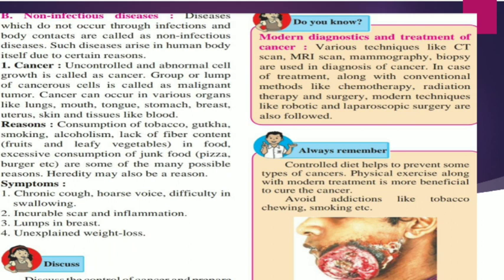Uncontrolled and abnormal cell growth is called cancer. A group or lump of cancerous cells is called a malignant tumor. Cancer can occur in various organs like lungs, mouth, tongue, stomach, breast, uterus, skin, and tissues like blood. The reasons for cancer include consumption of tobacco, gutka, smoking, alcoholism, lack of fiber content in food — that is, fruits and leafy vegetables — and excessive consumption of junk food like pizza and burgers.